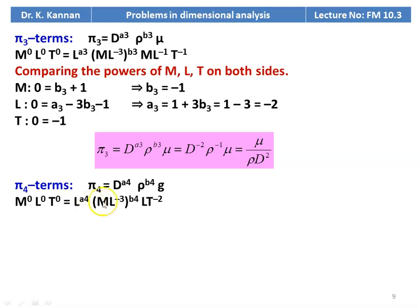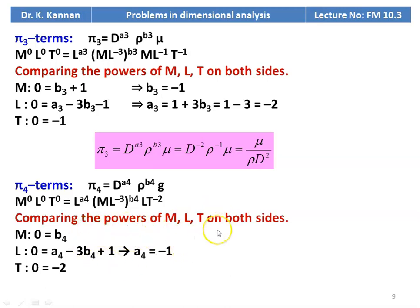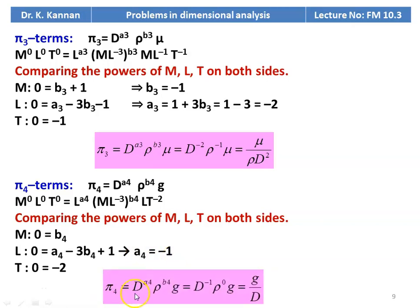For pi4 = D^a4 · rho^b4 · g: M⁰L⁰T⁰ = L^a4 · (ML⁻³)^b4 · (LT⁻²). Comparing powers: for M, b4 = 0; for T, 0 = −2 (verified); for L, 0 = a4 − 3b4 + 1, giving a4 = −1. So pi4 = D⁻¹ · rho⁰ · g = g/D.